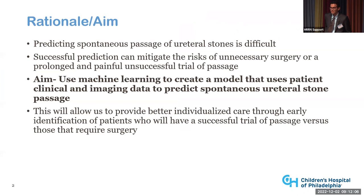On the other hand, a patient who ultimately will need surgery could be attempted with a trial of passage, meaning this patient is in pain for several days, possibly missing school or work, which could be avoided by early prediction. Our goal is to use machine learning to create a model that uses patient clinical and imaging data to predict spontaneous ureteral stone passage, providing better individualized care through early identification of patients who will have a successful trial versus those requiring surgery.